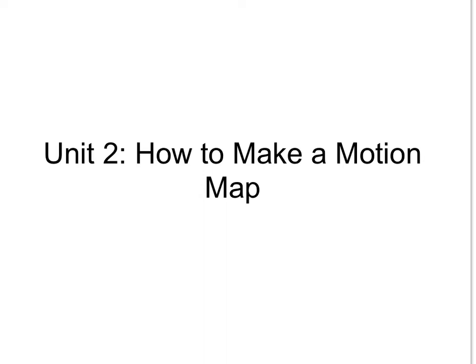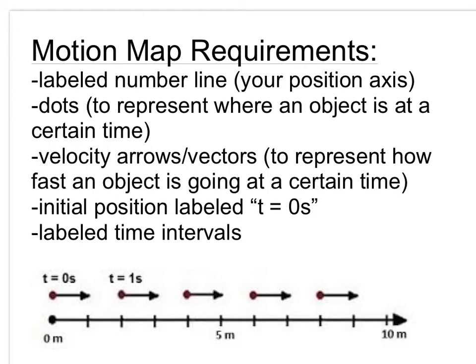Okay, so today we're going to be talking about how to make a motion map. There are a few requirements that I look for when I'm grading these things. The first thing is a labeled number line. So what I mean by that is that a motion map consists of first a number line. Now the confusing thing here...